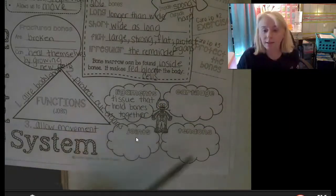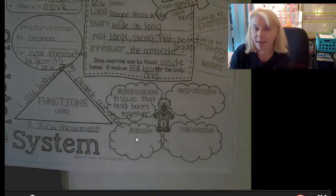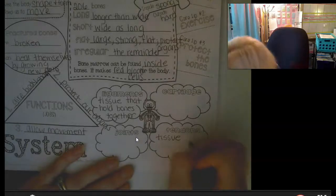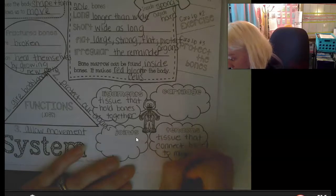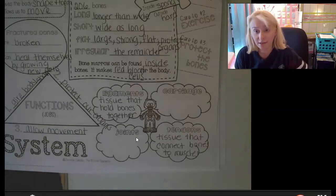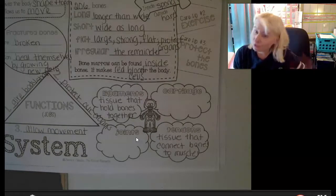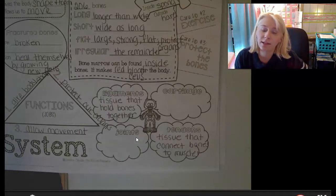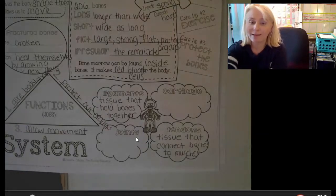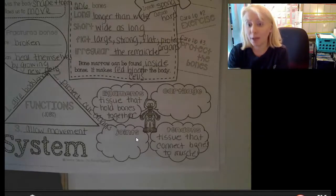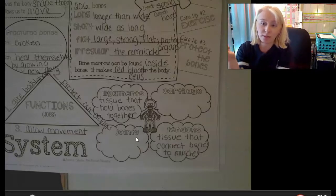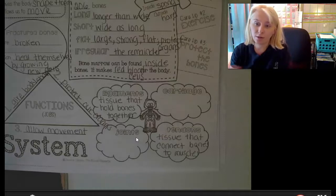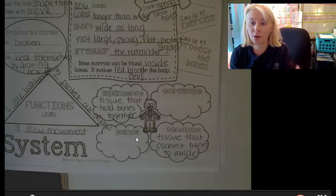I want to skip to tendons next — I feel like ligaments and tendons go together. Tendons are also tissue that connect bones to muscles. The difference: ligaments connect bones to bones, and tendons connect a bone to a muscle. Because the muscular system and skeletal system work together so we can move, we need connections between bones and between bones and muscles — that's the role of this tissue.